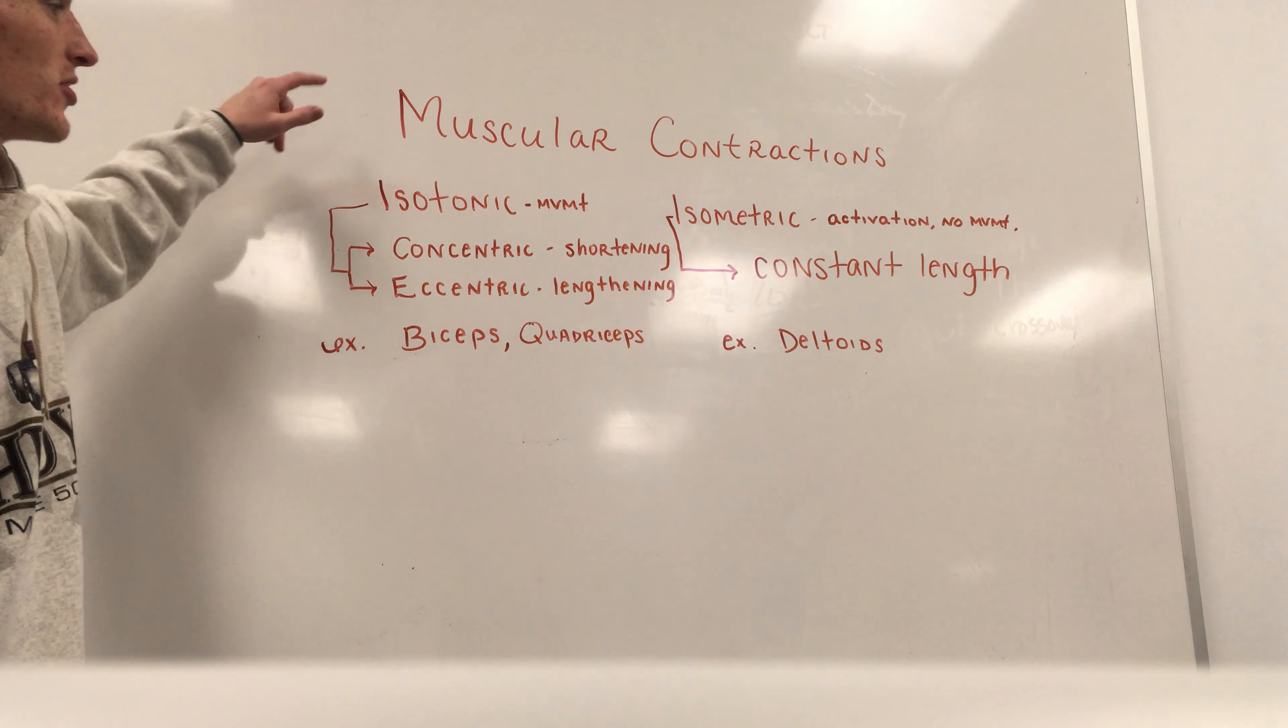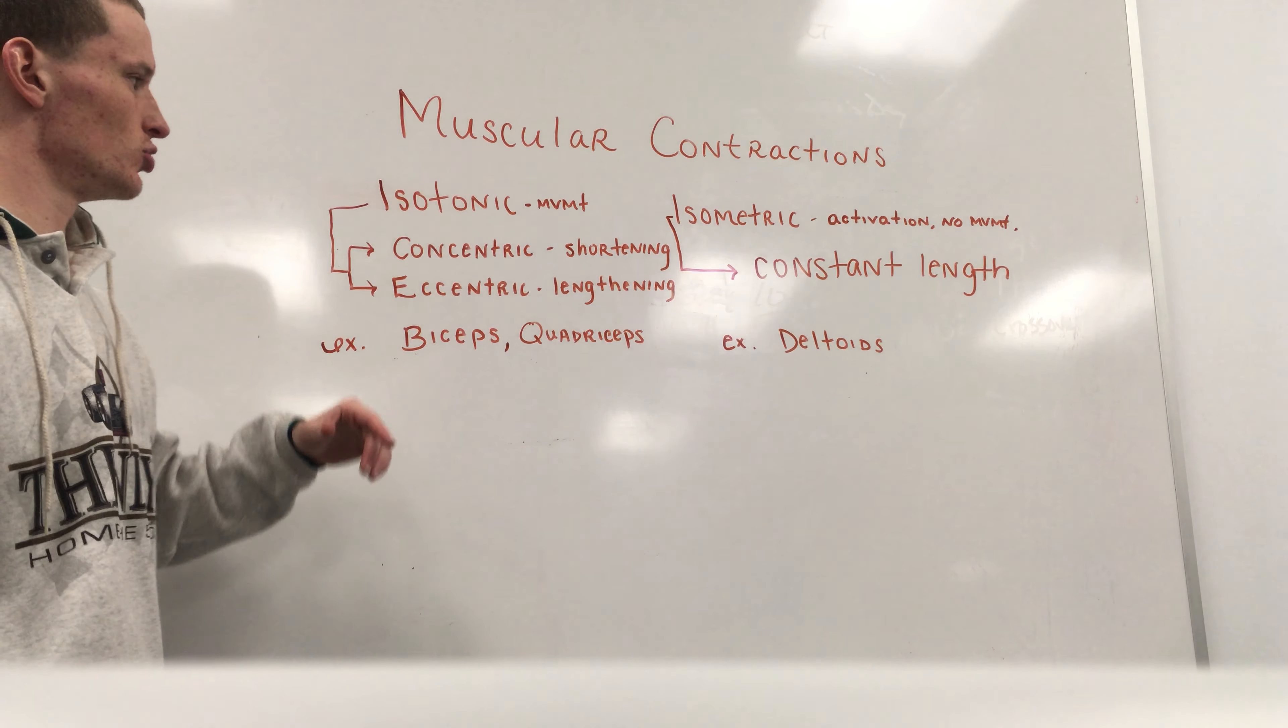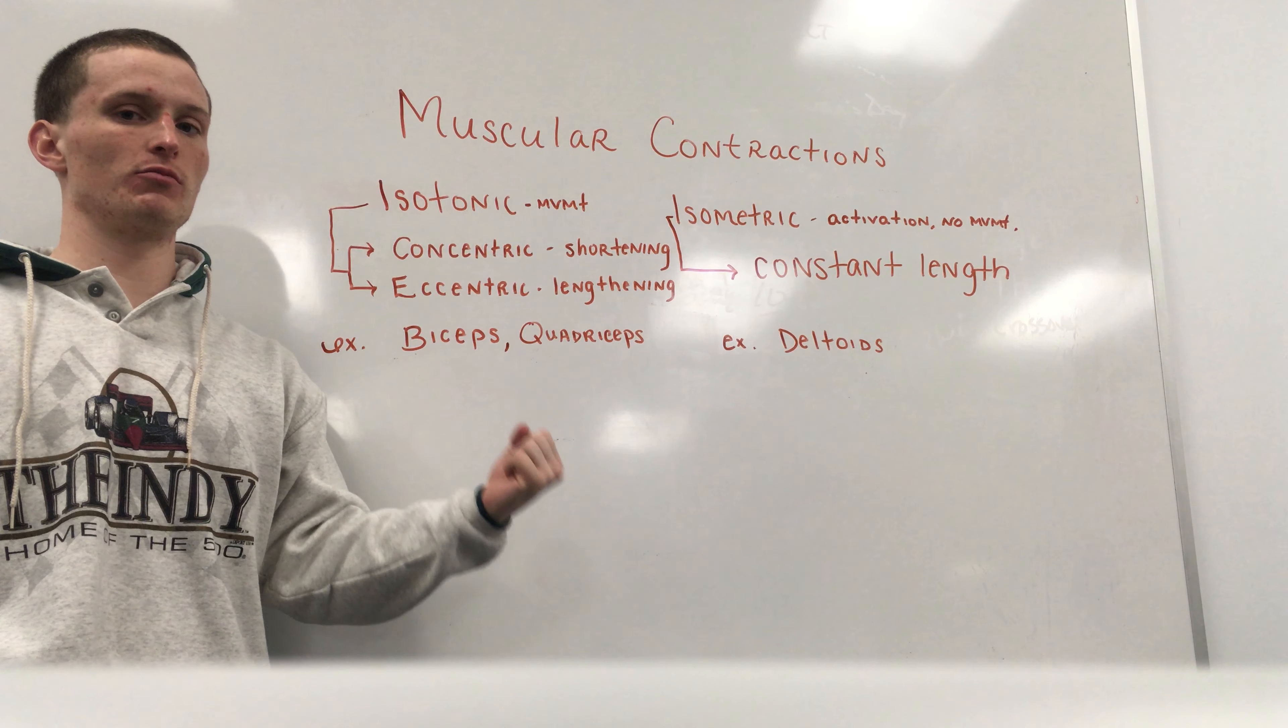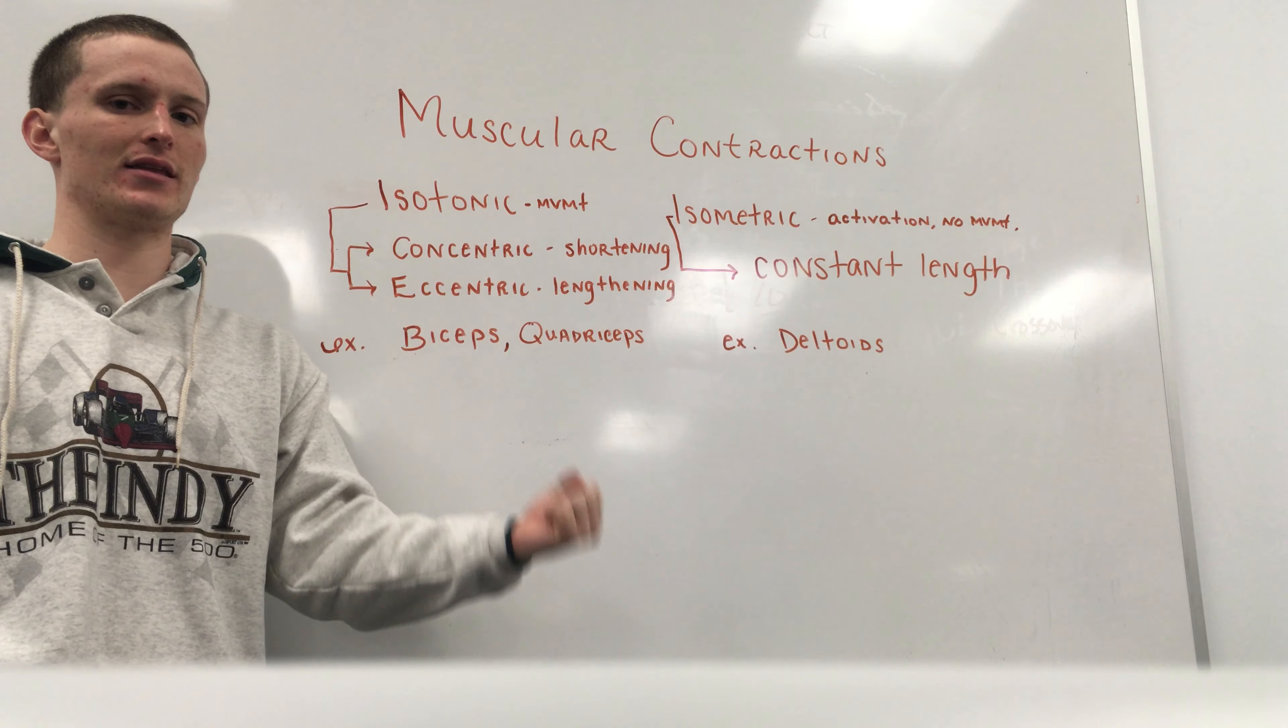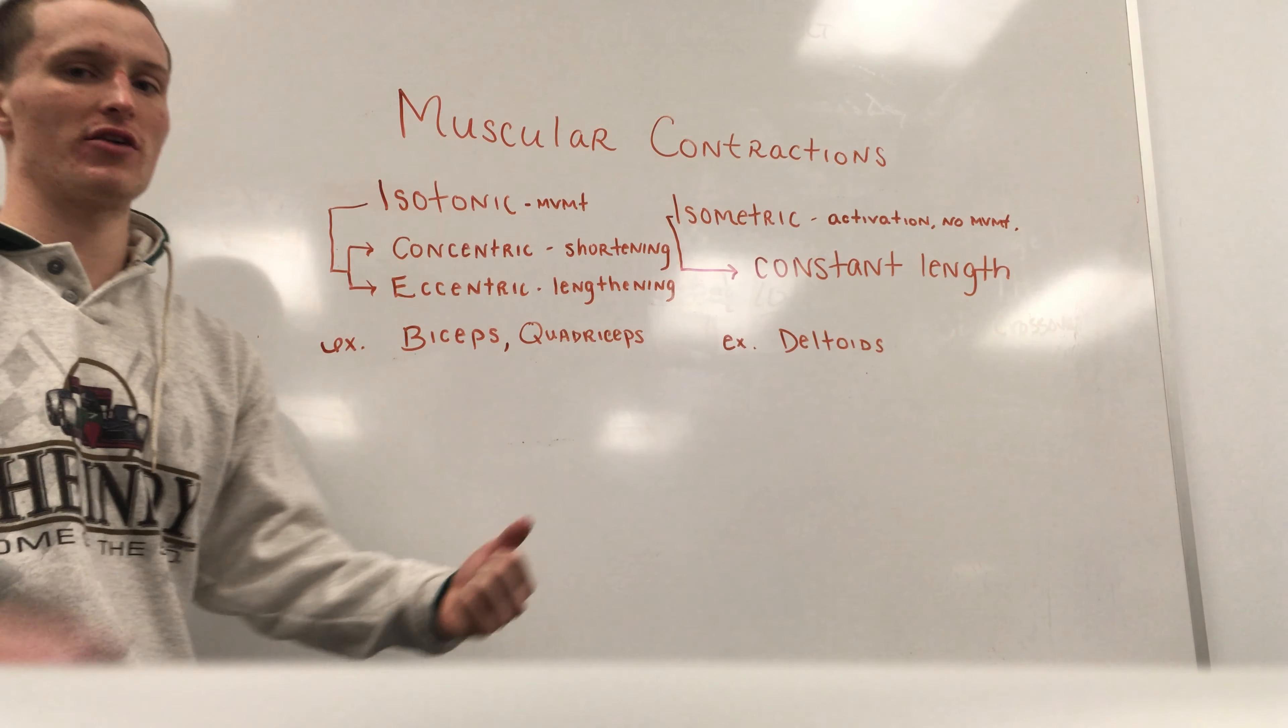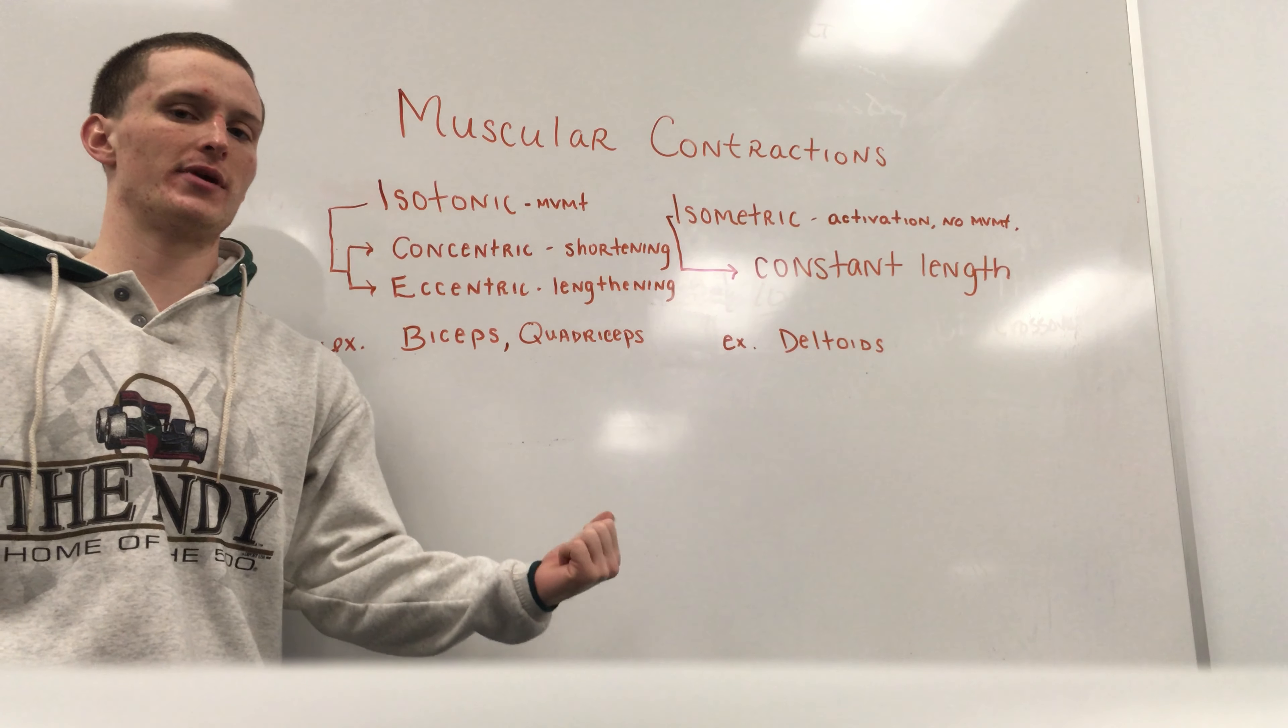So when talking about muscular contractions, we break it down into two subgroups. Isotonic, a contraction involving movement at the joint, shortening and lengthening of those muscle fibers, and isometrics, where you have activation of that muscle, but there's no movement at the joint.